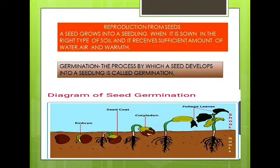After knowing the structure of a seed, let us start our main topic — reproduction in plants. Plants reproduce either through seeds or other plant parts like leaves, roots, stem, etc. A seed grows into a seedling when it receives a sufficient amount of water, air, and warmth. The process by which a seed develops into a seedling is called germination.